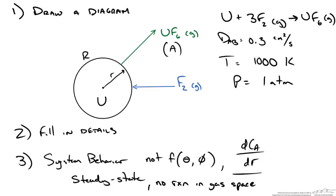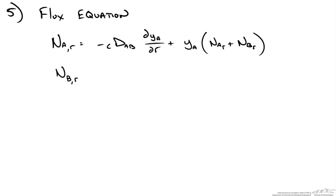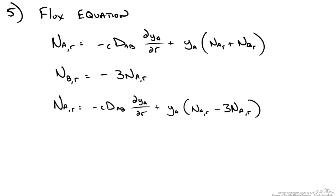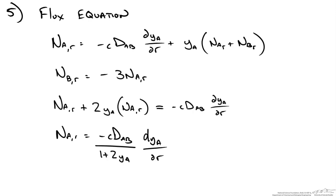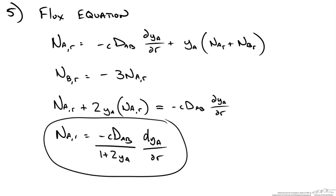We rewrite the flux of B in terms of A. Going back to our diagram, for every 1 mole of A (UF₆) fluxing away from the surface, 3 moles of fluorine must come to the particle to react. So the flux of B in the radial direction is negative 3 times that of A. Substituting this into the parenthesis and simplifying gives negative 2 times the flux of A. Rearranging, we arrive at our simplified flux expression for N_Ar.